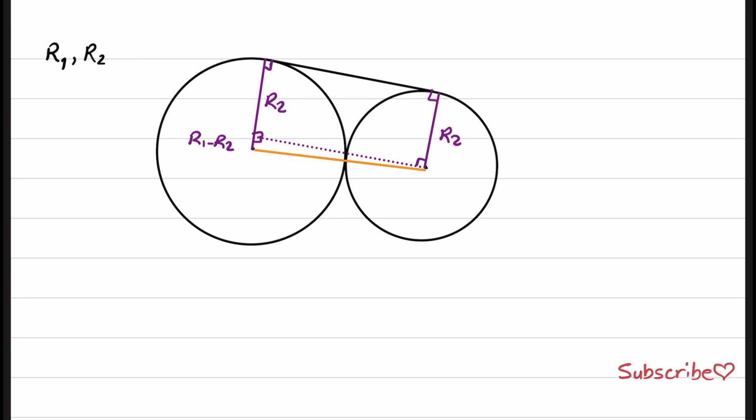Now we have a right triangle at this point. And if you take a look at this, this is a right triangle. We can easily use the Pythagorean theorem. Because this shape is a rectangle, if we calculate the length of this side, it is equal to the length of the common tangent. So by applying the Pythagorean theorem,